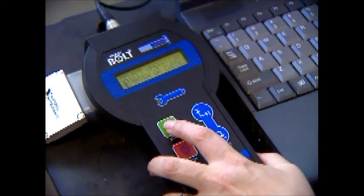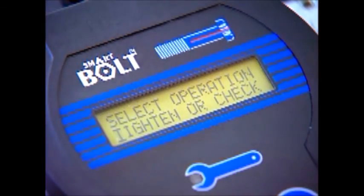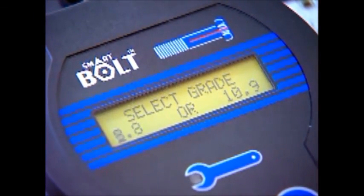The handheld unit converts the reading from the sensor into a load reading on the digital display. The operator simply selects the strength of grade of the bolt and the unit does the rest.